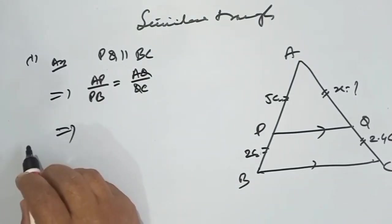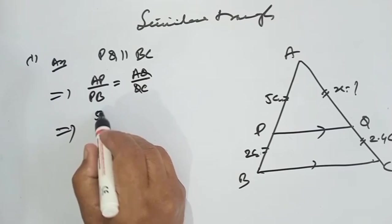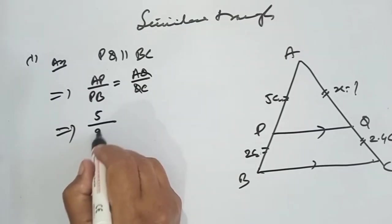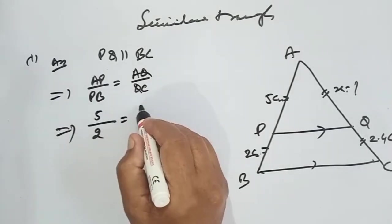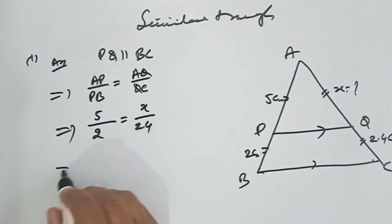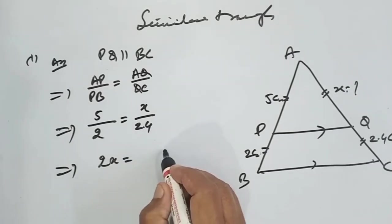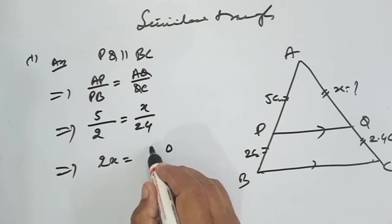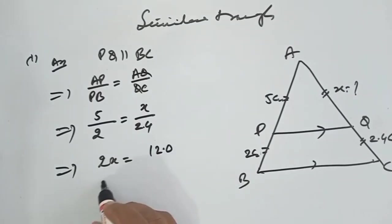This implies that AP is 5, PB is 2, AQ is x, and this is 2.4. It implies that 2x is equal to 6 cm. 6 cm is the answer.